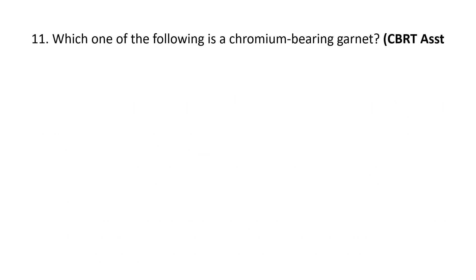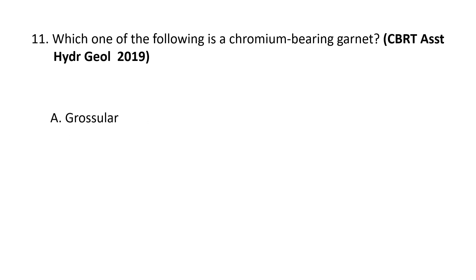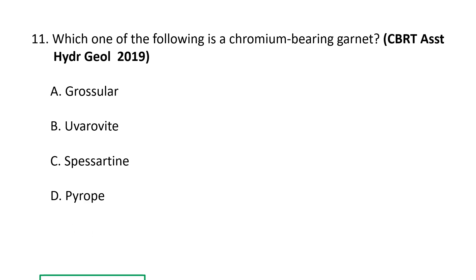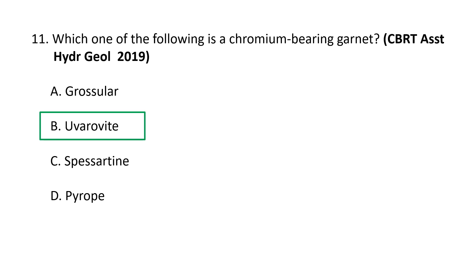Next question: which one of the following is a chromium-bearing garnet? a) grossular, b) uvarovite, c) spessartite, d) pyrope. The correct answer is b) uvarovite. Uvarovite is a chromium-bearing garnet group species with the formula Ca₃Cr₂(SiO₄)₃. It is an isosilicate discovered in 1832 by Germain Henri Hess, who named it after Count Sergey Uvarov, a Russian statesman and amateur mineral collector.